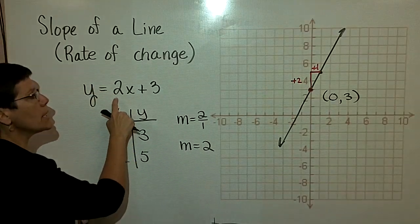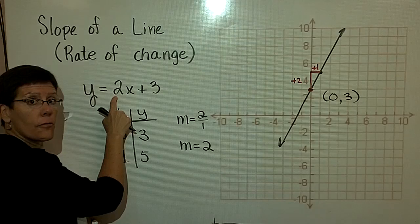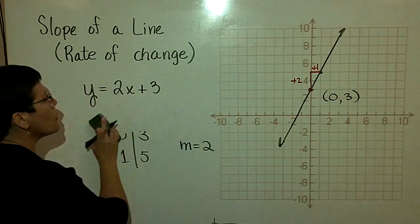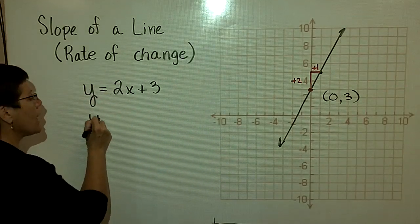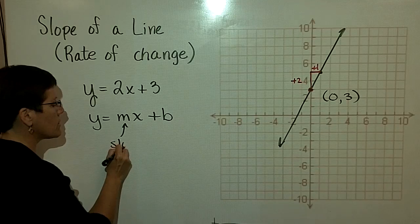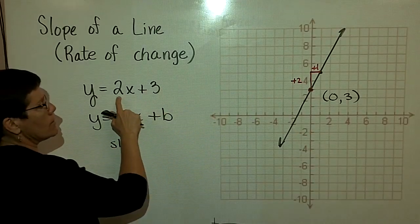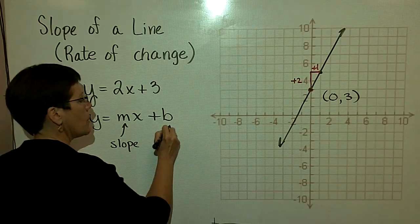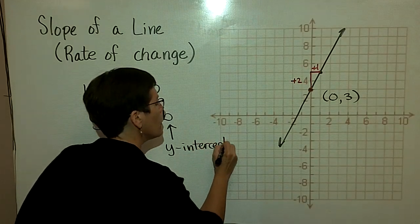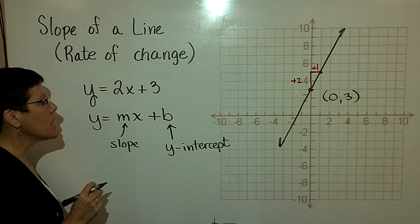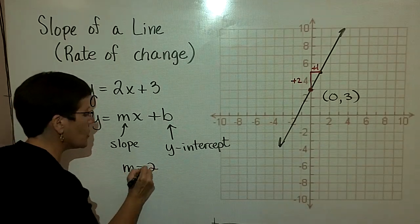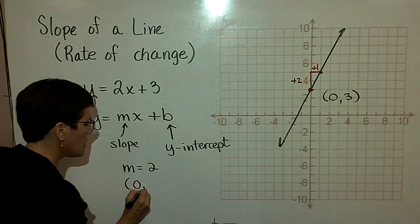When an equation is in this form, y equals a coefficient in front of x, plus or minus a constant, then it is in the form that is called y = mx + b. Where the coefficient of x is called the slope of the line. We just determined that the slope of this line is 2. And the b value here is called the y-intercept, or where the graph of this line crosses the y-axis.